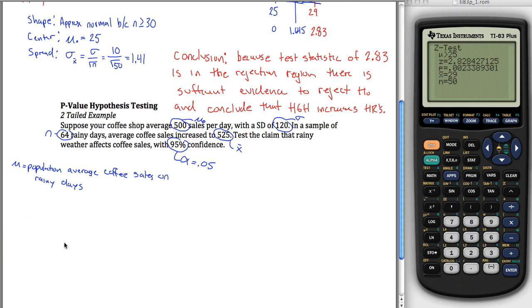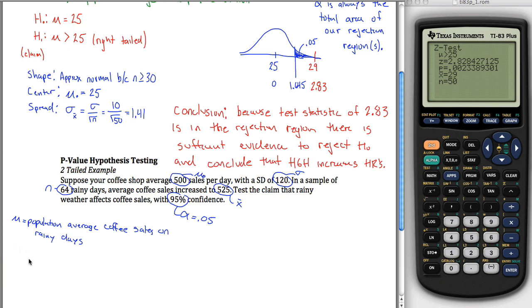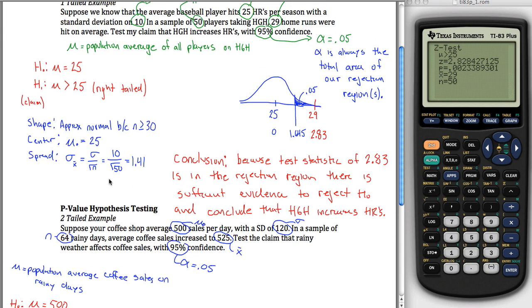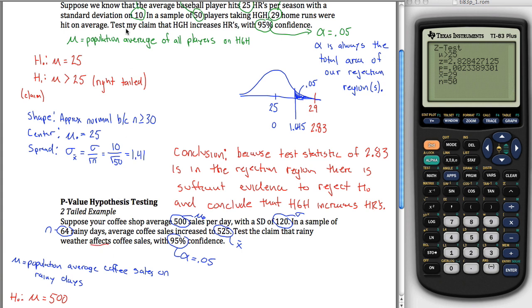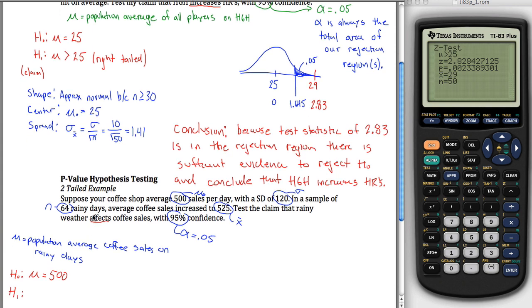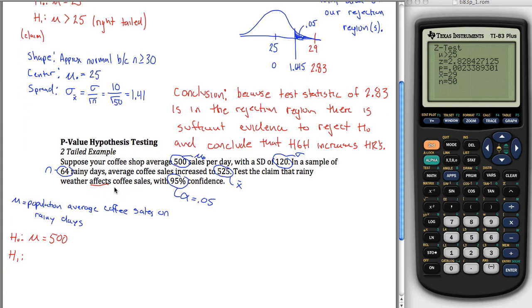All right, and if you have those, we can start stating our null and alternative hypothesis. Very similar to what we did up here. Up there we said that mu is equal to mu naught was our null hypothesis, h naught. Here it's same thing, mu equal to mu naught. Our null hypothesis will be that mu is equal to 500. Our alternative hypothesis will be a little bit different. It's not different because we're doing p-value hypothesis testing. It's different because of this word right here. Up here I said test the claim that HGH increases home runs, which is what told us to put a greater than sign right here, made it a right tailed test. Down here I just say that it affects coffee sales, so it either can increase or decrease coffee sales. In other words, our alternative hypothesis, our claim, is that mu does not equal mu naught. This is what's called a two-tailed test.